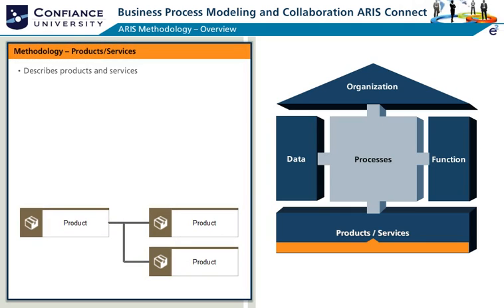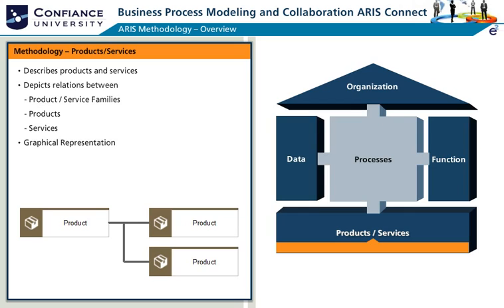The products and services view describes products and services which are outcomes of the processes. It depicts relations between product service families, products, and services. A typically used graphical representation is the model type product service tree.